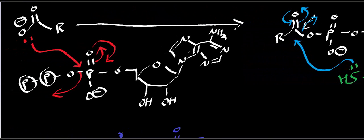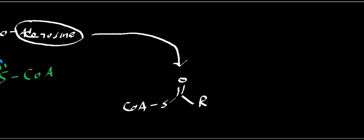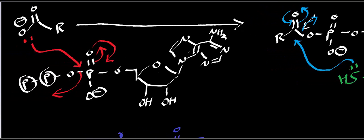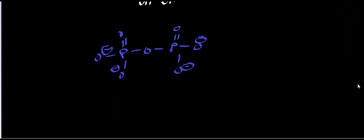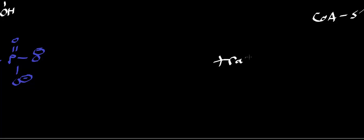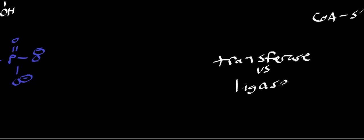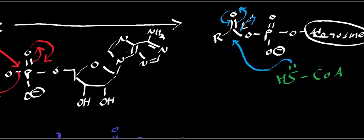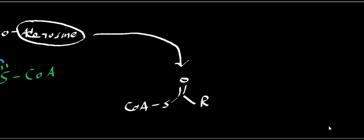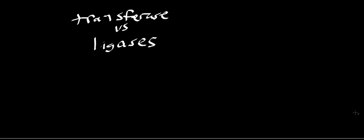So what type of enzyme is this? The net effect is combining two different molecules — coenzyme A and a fatty acid. Here's an important distinction: a transferase transfers a portion of a molecule, not the whole thing. A ligase transfers the whole molecule — maybe with the exception of protons, but generally the whole molecule. In this case we're transferring an entire CoA, not just a portion, so fatty acyl CoA synthetase is a ligase.